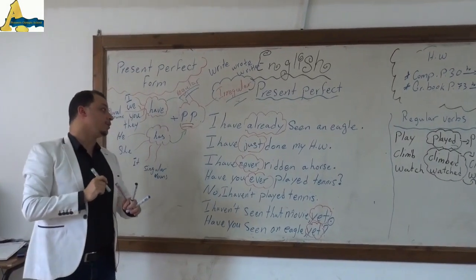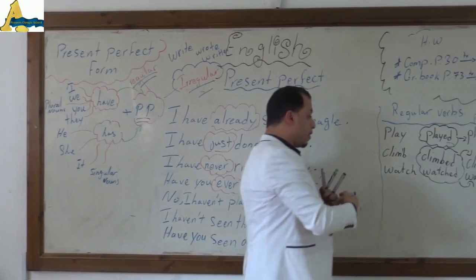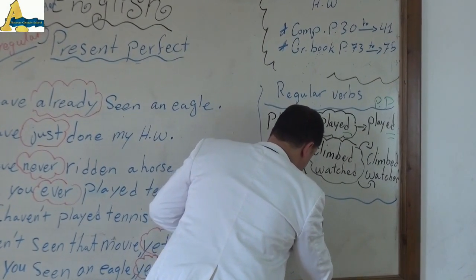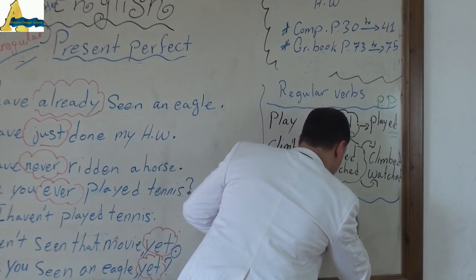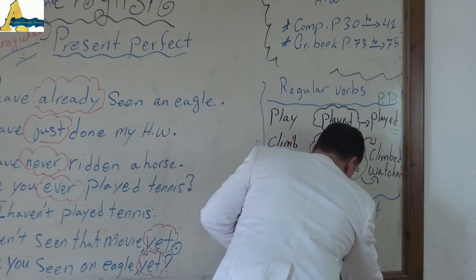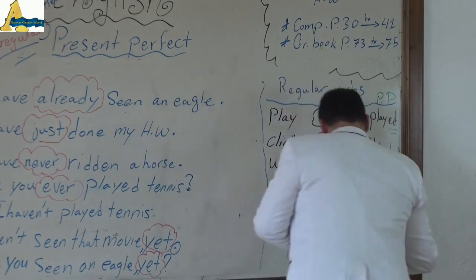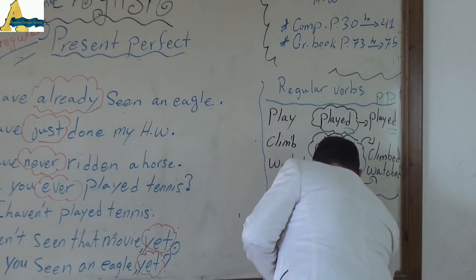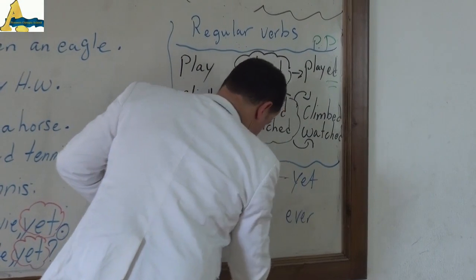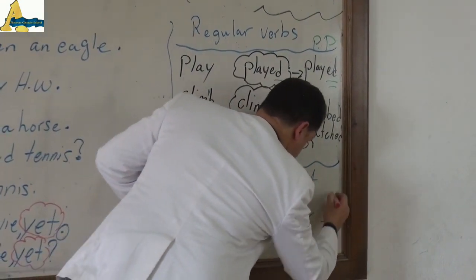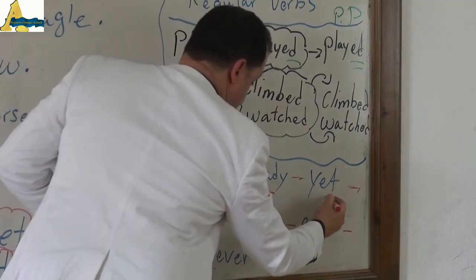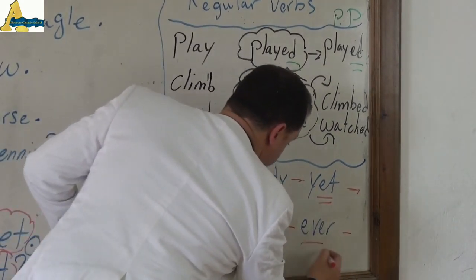Let's go to the keywords — it's really important. What are the keywords? These are the keywords: just, already, yet, since, for, ever, and never.